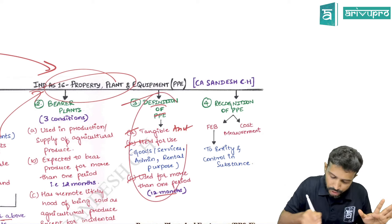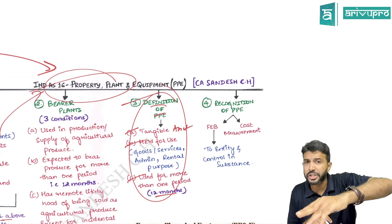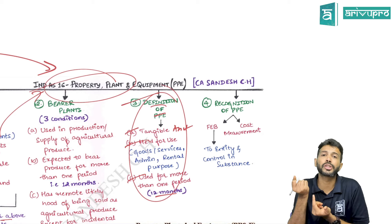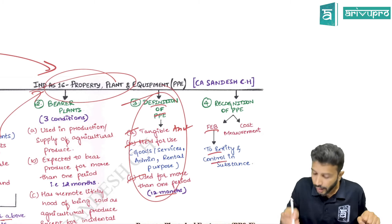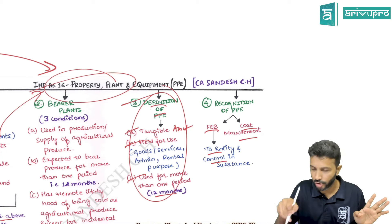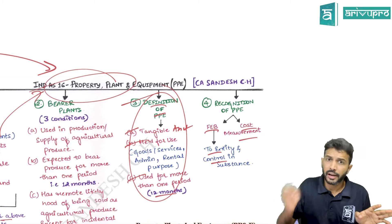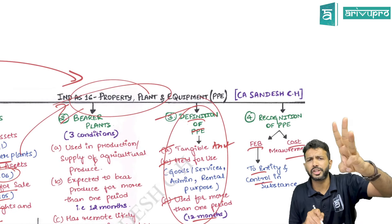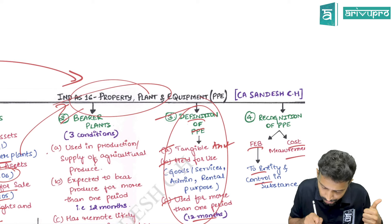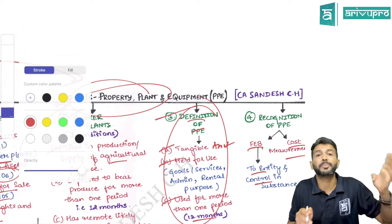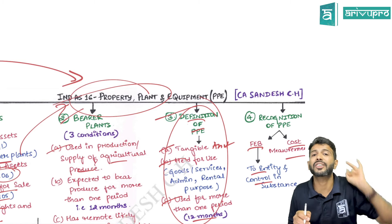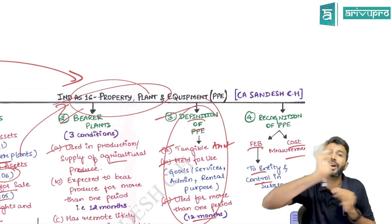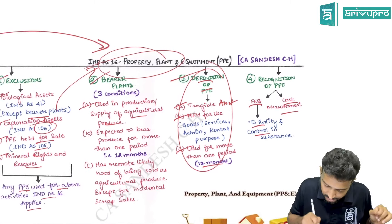To show PP in the balance sheet, two recognition criteria must be met: probable future economic benefit should flow to the entity, and the cost of the asset should be measured reliably. For bearer plants, IND AS 16 applies. A bearer plant satisfies three conditions: used in production and supply of agricultural produce, bears produce for more than 12 months, and has a remote likelihood of being sold as agricultural produce except for incidental scrap sales.